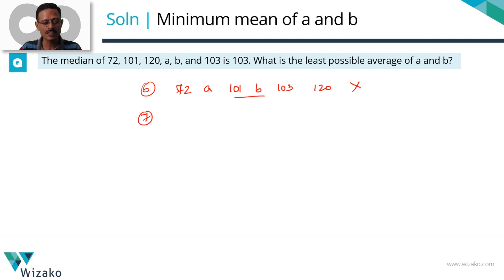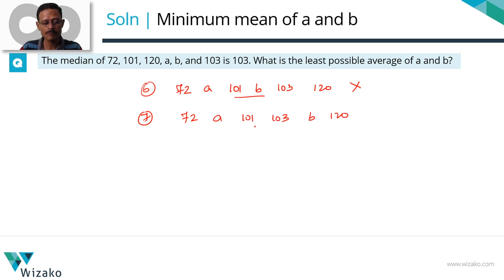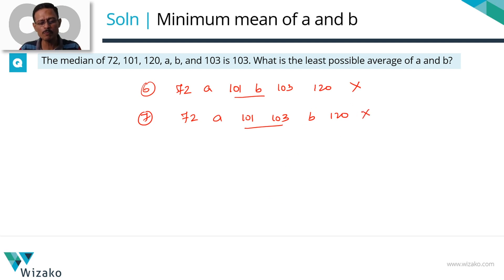Iteration 7: keep a between 72 and 101, push b further right — between 103 and 120. Ascending order: 72, a, 101, 103, b, 120. The middle two numbers are 101 and 103; median is 102, not 103. Pushing b any further right, the middle two numbers still remain 101 and 103. So keeping a between 72 and 101 is not working.